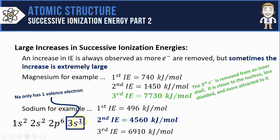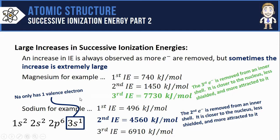Once that one electron is gone though, then we immediately start removing from the second energy level. So the second electron is removed from an inner shell—it's closer to the nucleus, less shielded from it, and more attracted to it.